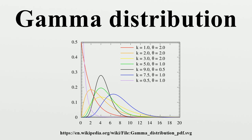If k is an integer, then the distribution represents an Erlang distribution, i.e., the sum of k independent exponentially distributed random variables, each of which has a mean of θ. The gamma distribution is the maximum entropy probability distribution for a random variable x for which E[x] = kθ = α/β is fixed and greater than 0.